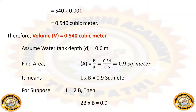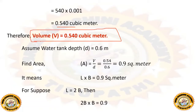Therefore, the volume of the tank is equal to 0.54 cubic meters. Now, we have to assume the water tank depth. Let us assume the depth is 0.6 meters.